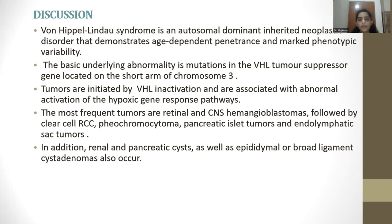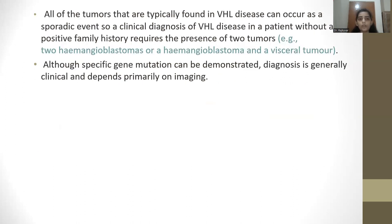Discussion: Von Hippel-Lindau syndrome is an autosomal dominant inherited neoplastic disorder that demonstrates age-dependent penetrance and marked phenotypic variability. The basic underlying abnormality is a mutation in the VHL tumor suppressor gene located on the short arm of chromosome 3. The tumors are initiated by VHL inactivation and are associated with abnormal activation of the hypoxic gene response pathway. The most frequent tumors are retinal and CNS hemangioblastomas, followed by clear cell RCC, pheochromocytoma, pancreatic islet tumors, and endolymphatic sac tumors. Additionally, renal and pancreatic cysts as well as epididymal or broad ligament cystadenomas also occur.